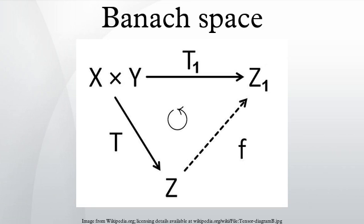That is to say, for every Cauchy sequence x_n in X, there exists an element x in X such that it converges. Equivalently, the vector space structure allows one to relate the behavior of Cauchy sequences to that of converging series of vectors. A normed space X is a Banach space if and only if each absolutely convergent series in X converges.